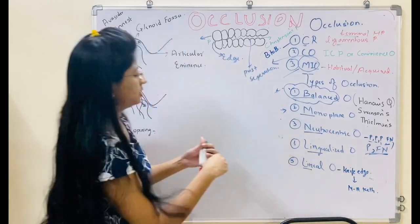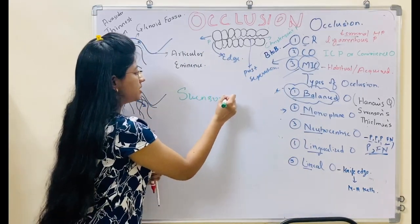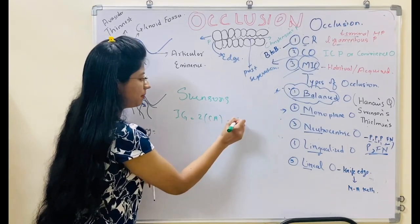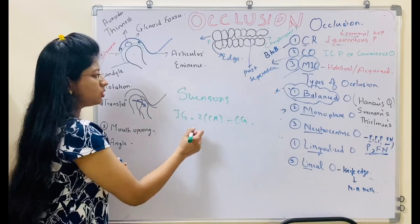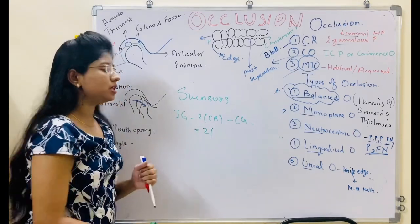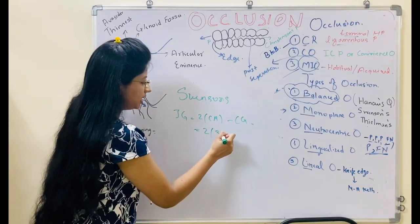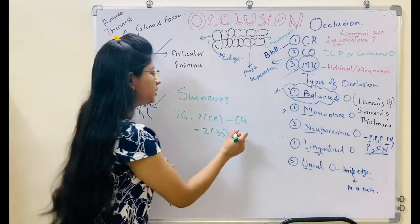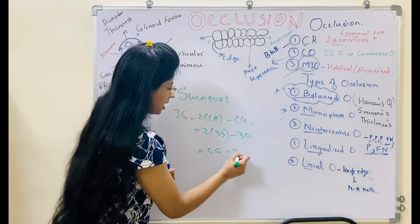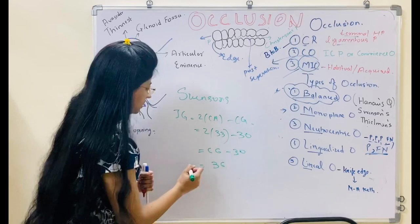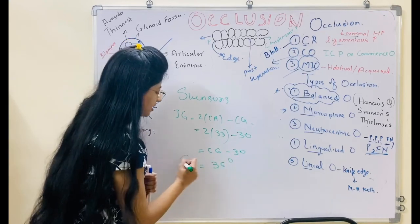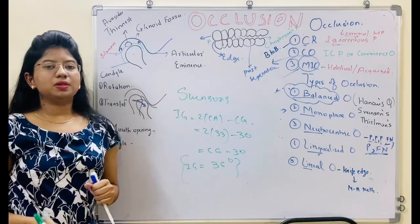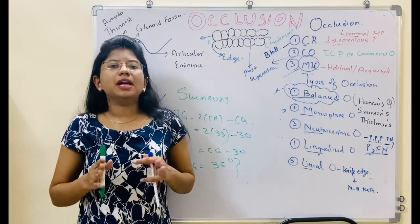Swenson's formula states: incisal guidance = 2 × cusp angulation minus condylar guidance. For example, if using anatomic teeth (33 degrees) and the condylar guidance from the protrusive bite is 30 degrees, then it will be 2×33 minus 30 = 66 minus 30 = 36 degrees. So your incisal guidance will be 36 degrees. Use Swenson's formula and Thilman's formula together to solve MCQs.